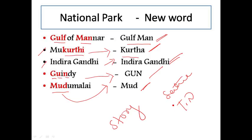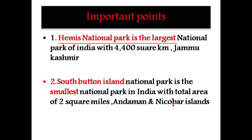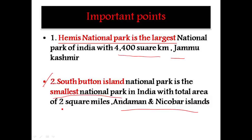Let us see some important information related to national parks. Hemis National Park is the largest national park in India, with 4,400 square kilometers, and it is in Jammu and Kashmir. South Button Island National Park is the smallest national park in India, located in Andaman and Nicobar, with a total area of 2 square miles.